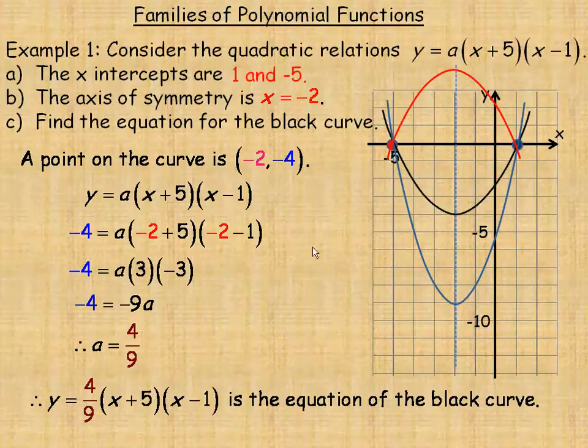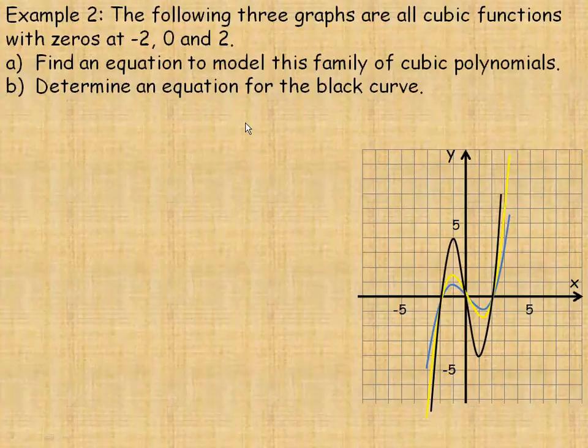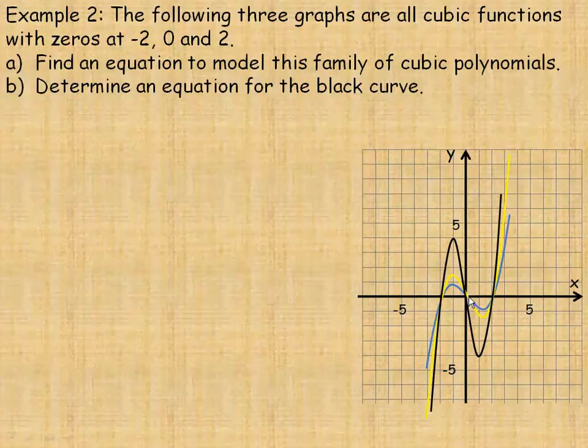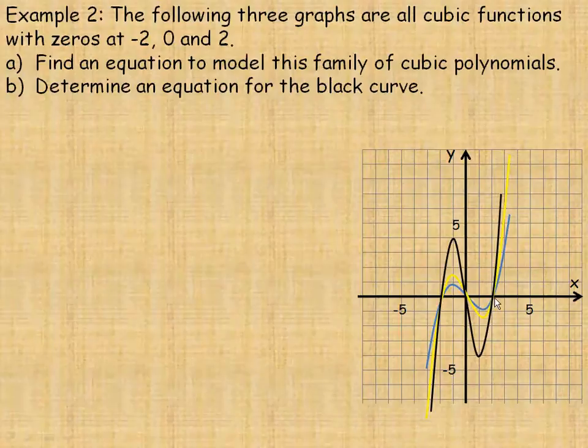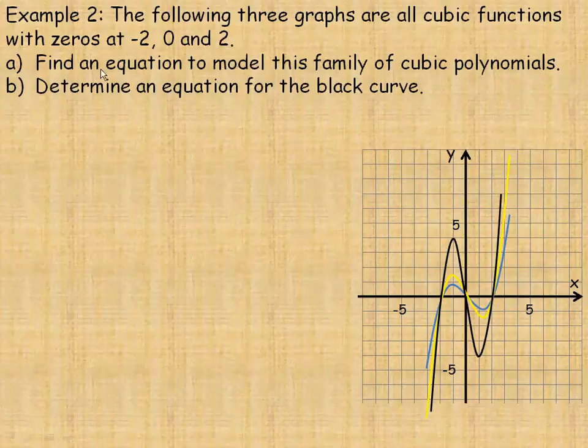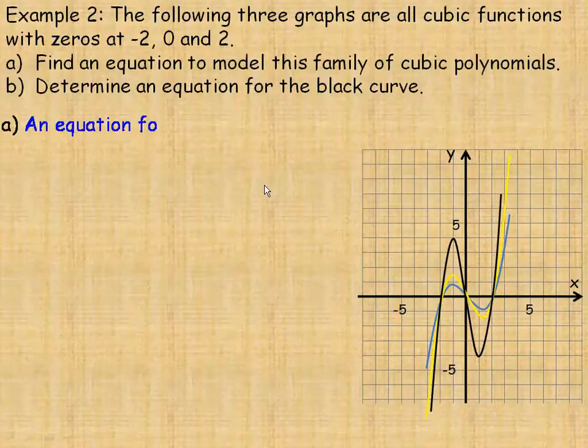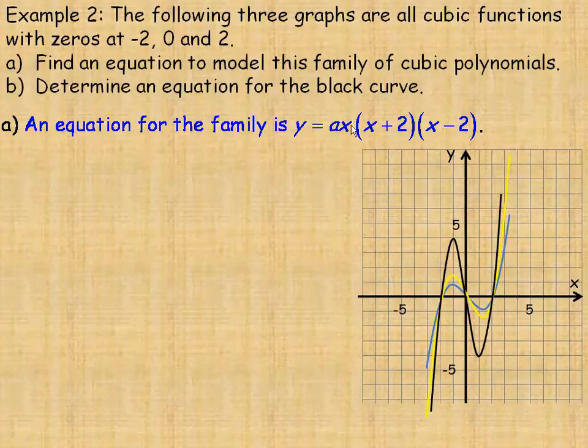Flipping over to the example on page 2 here, we have three different cubic shape functions drawn here, and all of their intercepts are at negative 2, 0, and 2 for all three of the curves. So they would all belong to the same cubic family. In part A, we're asked to write an equation for this family of cubic polynomials. An equation for this family would be a, or k, or whatever you want to use as your stretch factor.